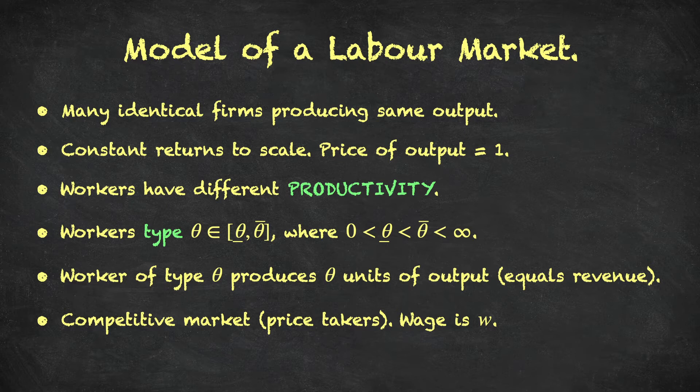A worker of type theta is able to produce theta units of output. Since output sells at a price of one, that is also their revenue. So each type of worker has a specific number theta, and that's the amount of money they can make for the firm if they get employed.